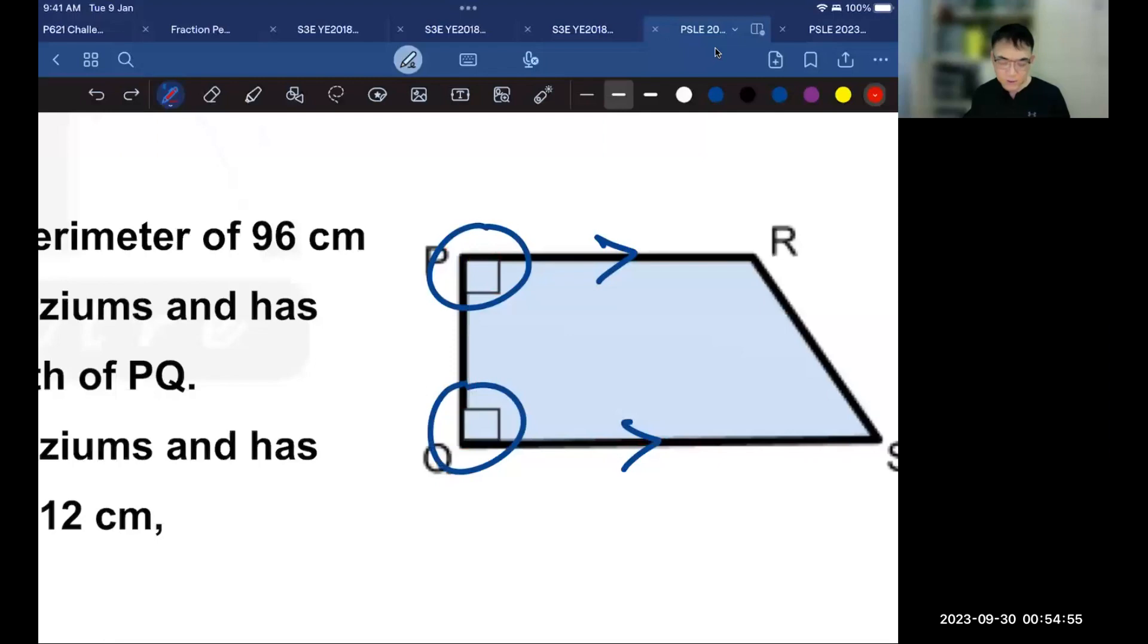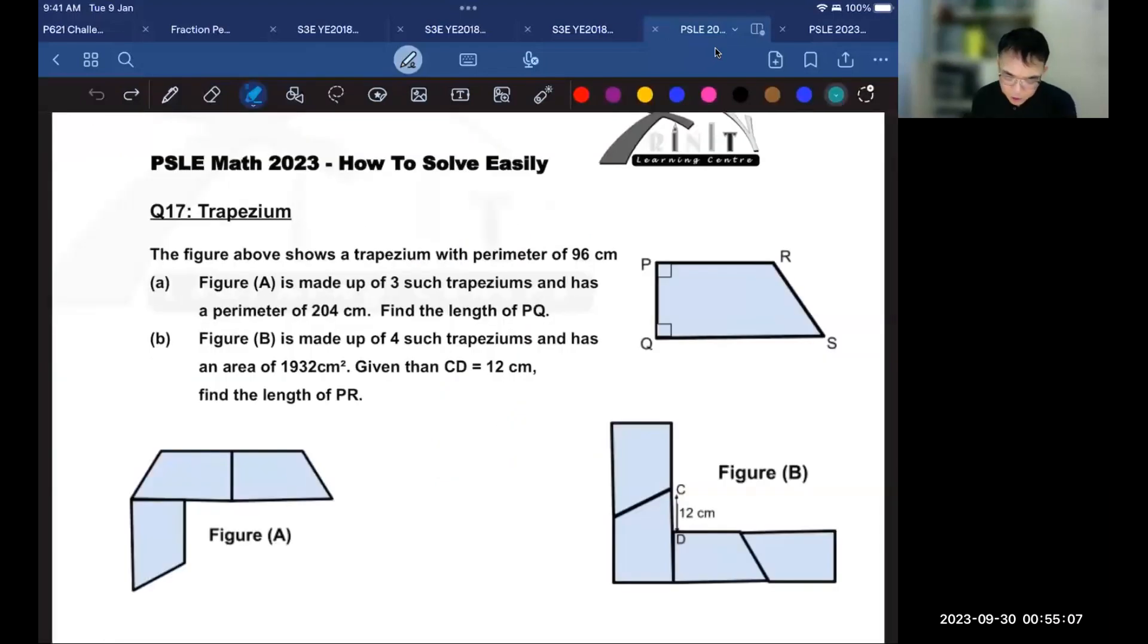The first thing is to focus on the keywords. The figure is made of a trapezium with a perimeter of 96 centimeters. It says that figure A is made up of three such trapeziums. So these three trapeziums are similar to the one over here. And it has a perimeter of 204. The question is asking you to find the length of PQ.